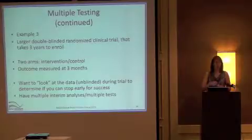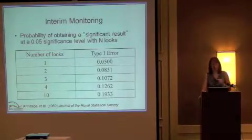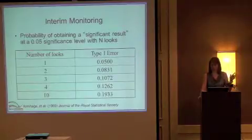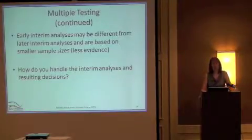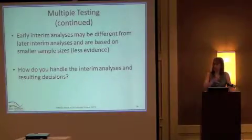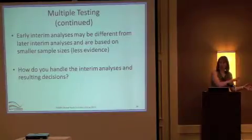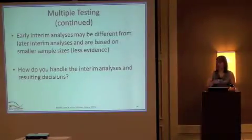If you put interim analyses in your trial where you're going to look early for the possibility of stopping early and declaring success, there are multiple considerations. The probability of attaining a significant result at 0.05 with a certain number of looks — the more looks you make, the higher the probability of a type one error. This has been known for a long time. Earlier interim analyses are also based upon less evidence — you have fewer subjects — so those earlier looks may differ from later analyses.